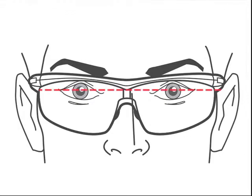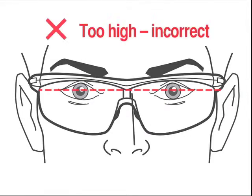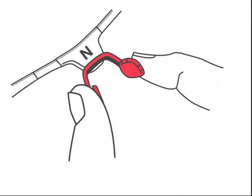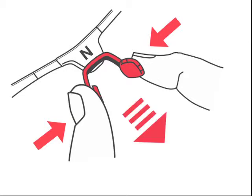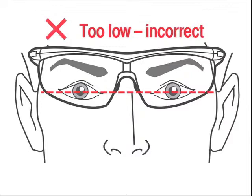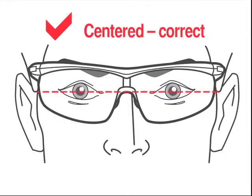If your eyes are not centered in the lens, too high, like this, adjust the nose bridge to position two or three by squeezing both nose pads together and slowly pulling down. If they are too low, return the nose bridge to position one. This example shows the correct position, with eyes centered in the lens. That was easy.